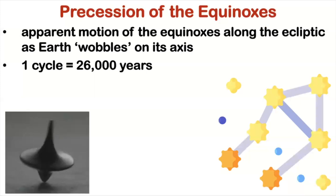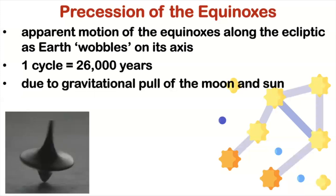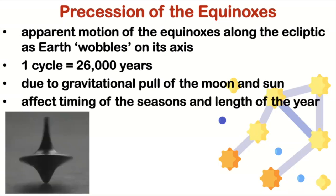This is why we say the equinoxes are precessing through the zodiac. So why does this happen? Well, it's basically due to the gravitational pull of the Moon and the Sun on the Earth's equatorial bulge. So over time, this gravitational pull causes the Earth's rotational axis to slowly shift.